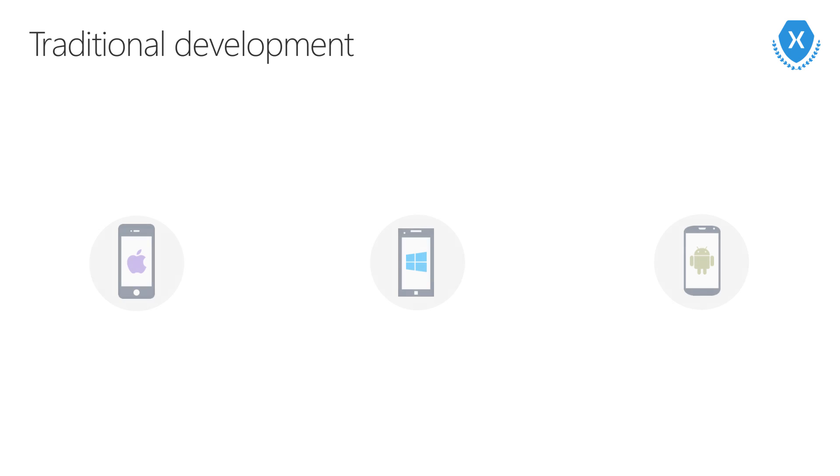So we need to reach our users and we know our users want to use applications. So how do we go about making those applications? Well, we'll focus on the three big ecosystems: iOS, Windows, and Android.